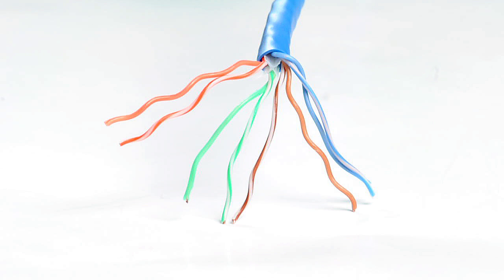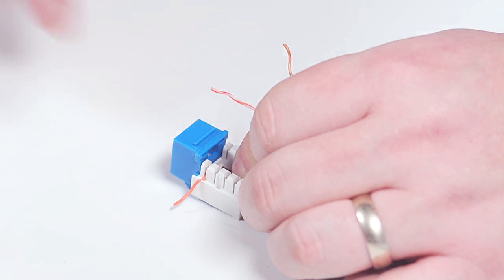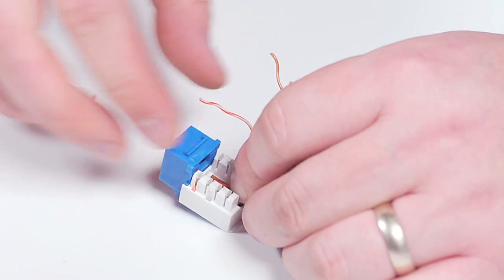You'll notice that each conductor has a color, orange, orange-white, green, green-white, etc. Match the color conductors to the color code and place in the appropriate IDC slot.